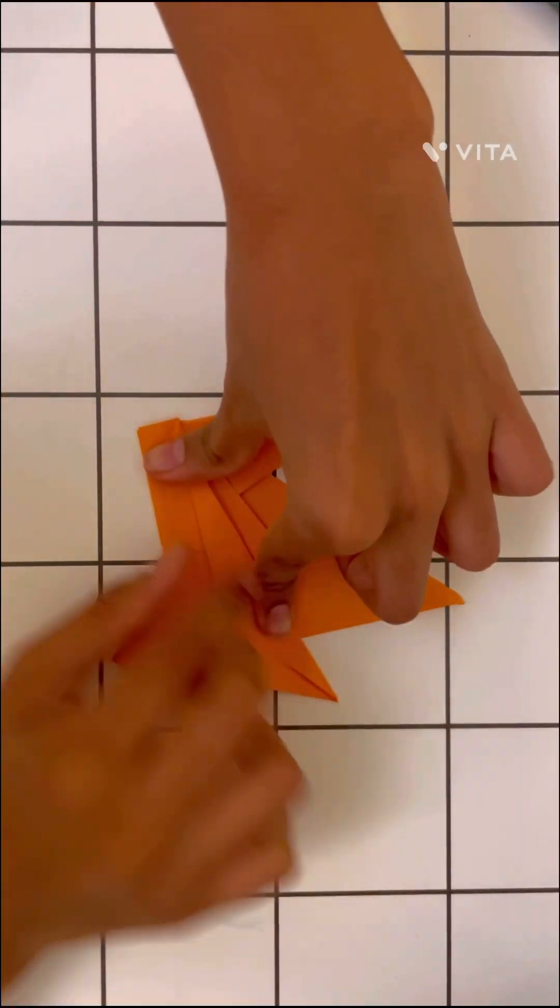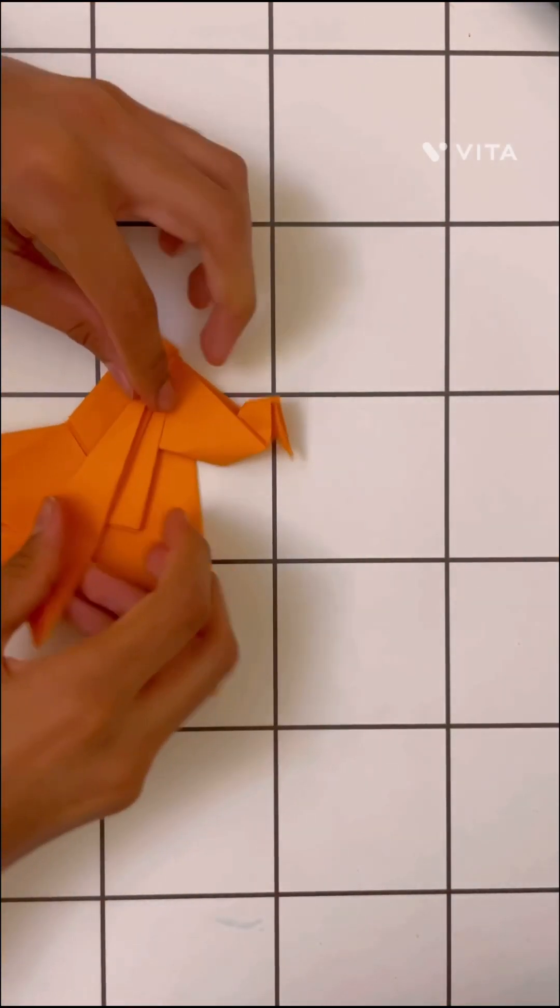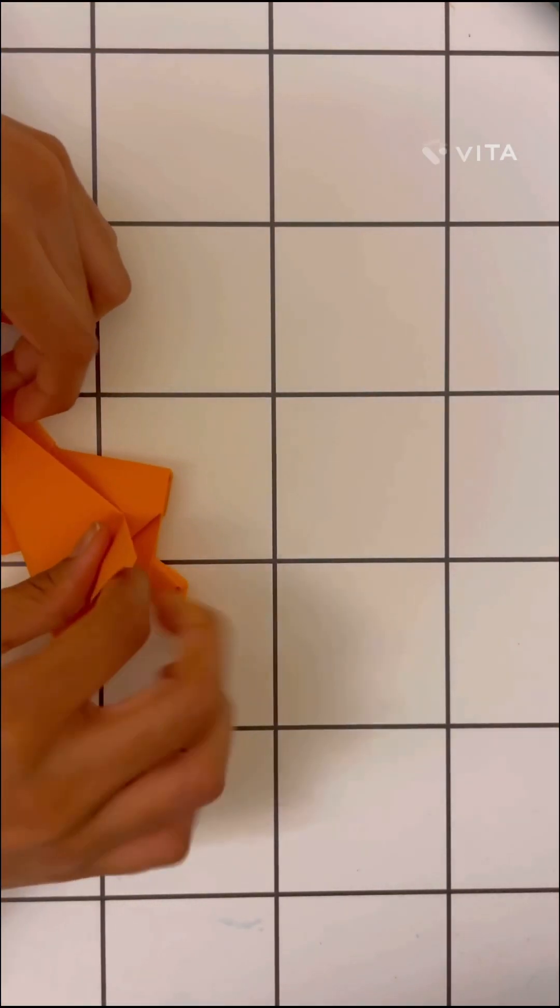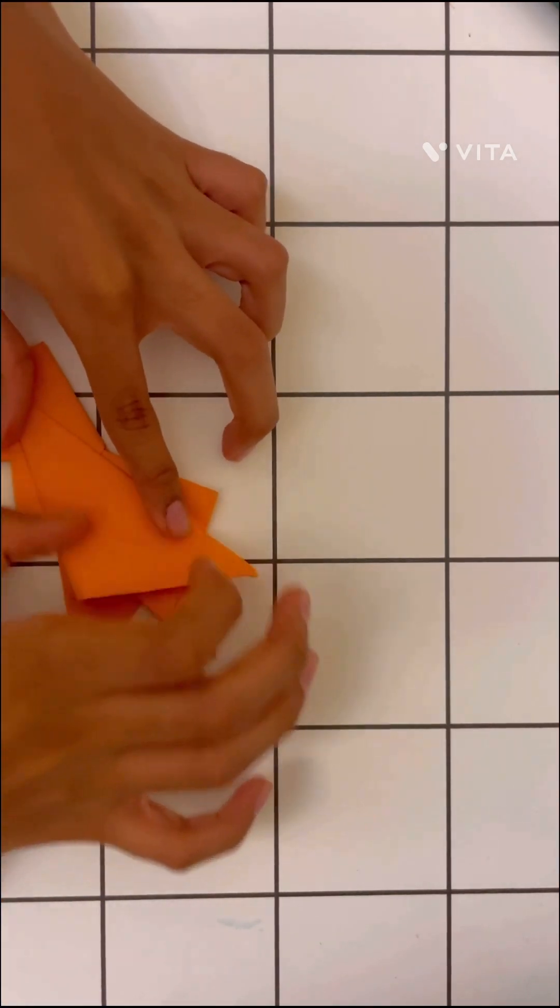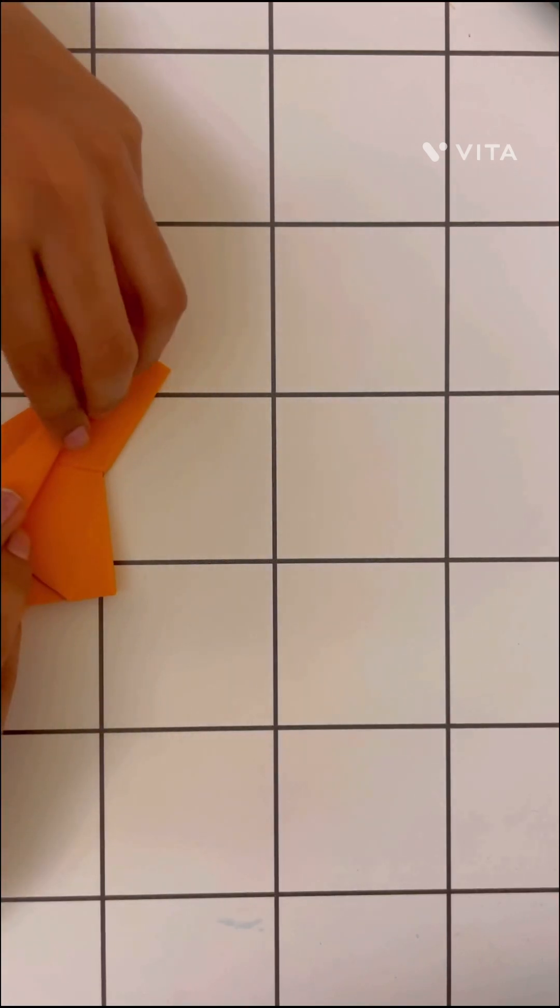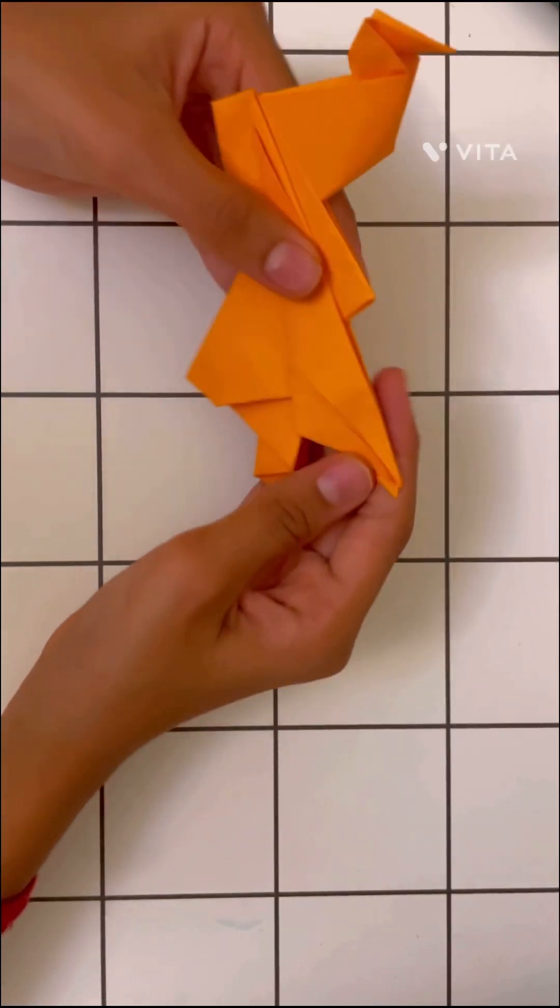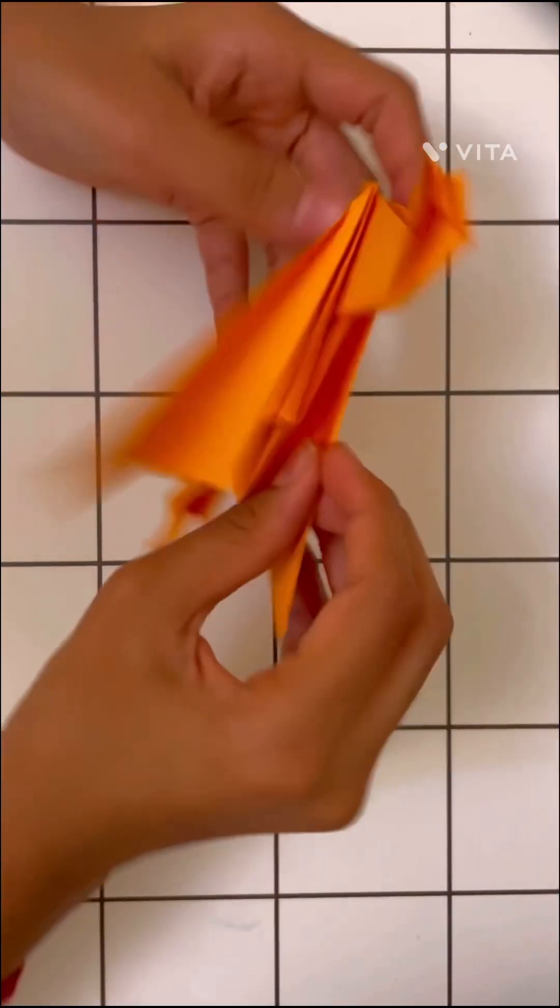There you are. Then the same thing on this side. And then this, you can see like the both wings are like almost the same.